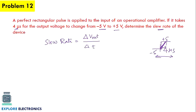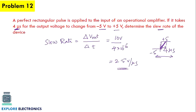The voltage changes from minus 5 to plus 5 volts, which is a total change of 10 volts. The time taken is 4 microseconds (4×10⁻⁶ s). So slew rate equals 10 volts divided by 4×10⁻⁶, which gives 2.5 volts per microsecond.